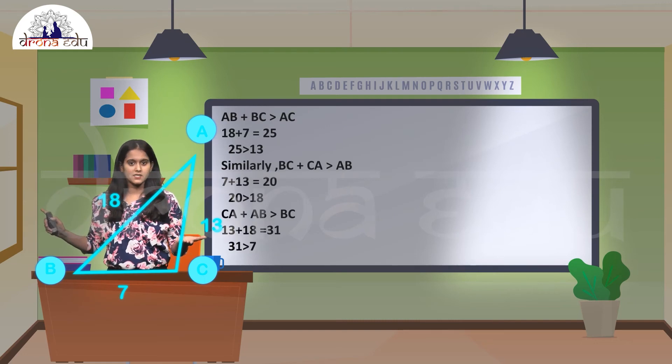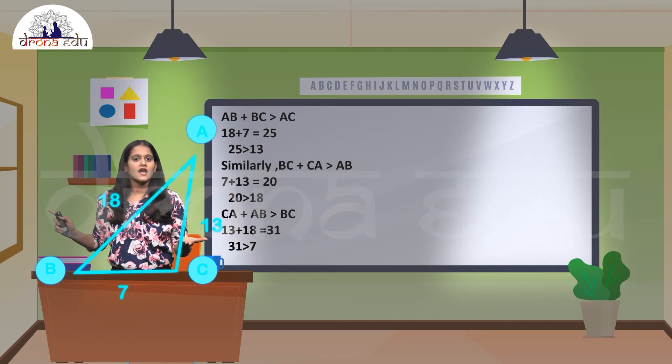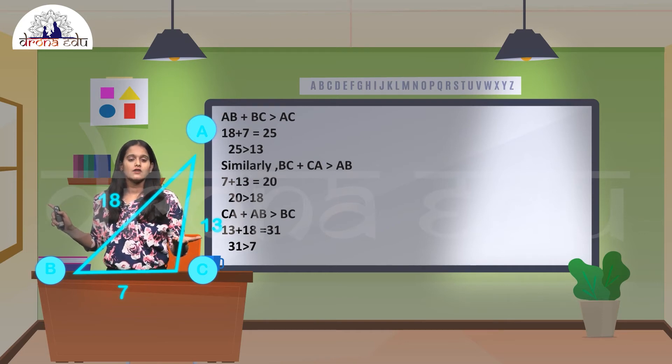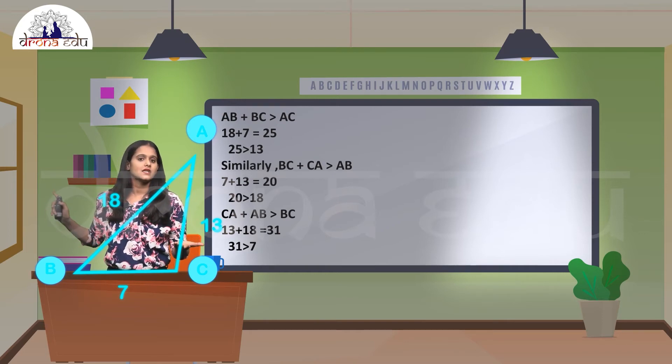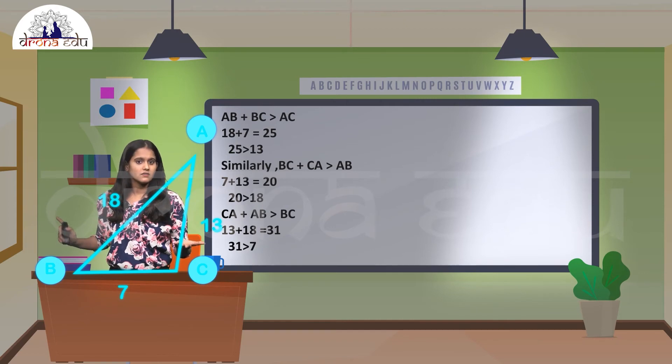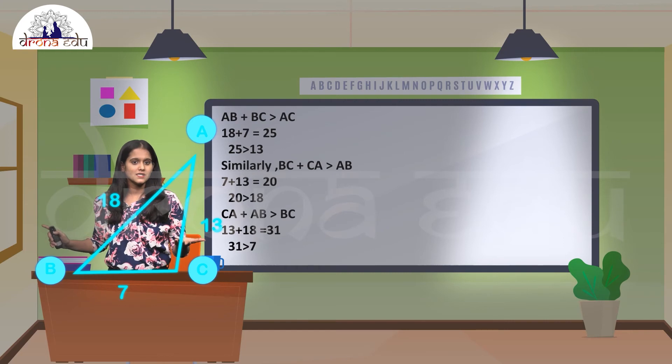Similarly, for the second case where BC + CA > AB, we have 7 + 13, which gives 20, where 20 is greater than 18. And the third case, CA + AB > BC, where 13 + 18 = 31, which is greater than 7.